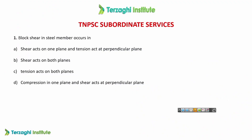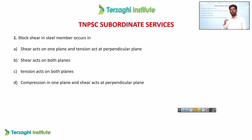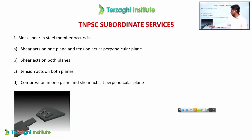Block shear is a joint failure. The joint involves a plate and bolt. The bolt has individual failure modes: shearing failure, bearing failure, and tension failure. When the plate and bolt together come out of the connection, that is a joint failure.